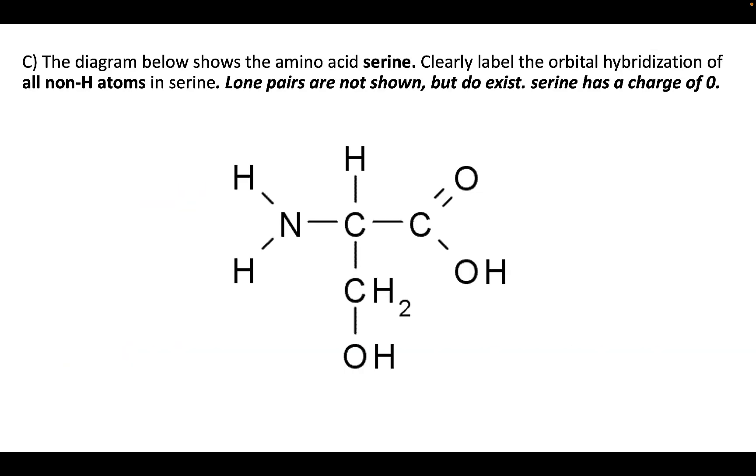Next we want to look at a more involved molecule. Here we have an amino acid, and we want to label the orbital hybridization of all the non-hydrogens, keeping in mind that there are lone pairs that are not shown here but definitely do exist. Let's see where those lone pairs are to begin with. They're going to be in these positions, one on the nitrogen, two on the oxygens, and this should be reminiscent of what we've seen before.